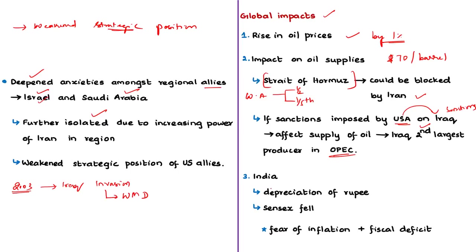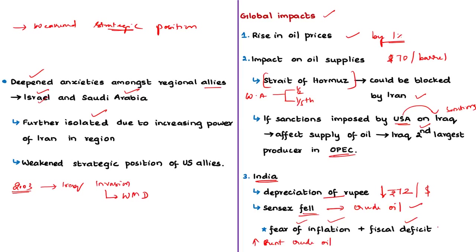According to experts, blocking the Strait of Hormuz is unlikely because the USA has threatened Iraq with severe sanctions. Iraq is the second largest producer in OPEC nations. Looking at impacts felt in India: the rupee depreciated to 72 rupees against the US dollar, and the Sensex suffered its worst fall in a year because crude oil prices are rising. This situation has created fears of inflation and worries over the fiscal deficit. Gold prices have also increased to their highest in almost seven years.